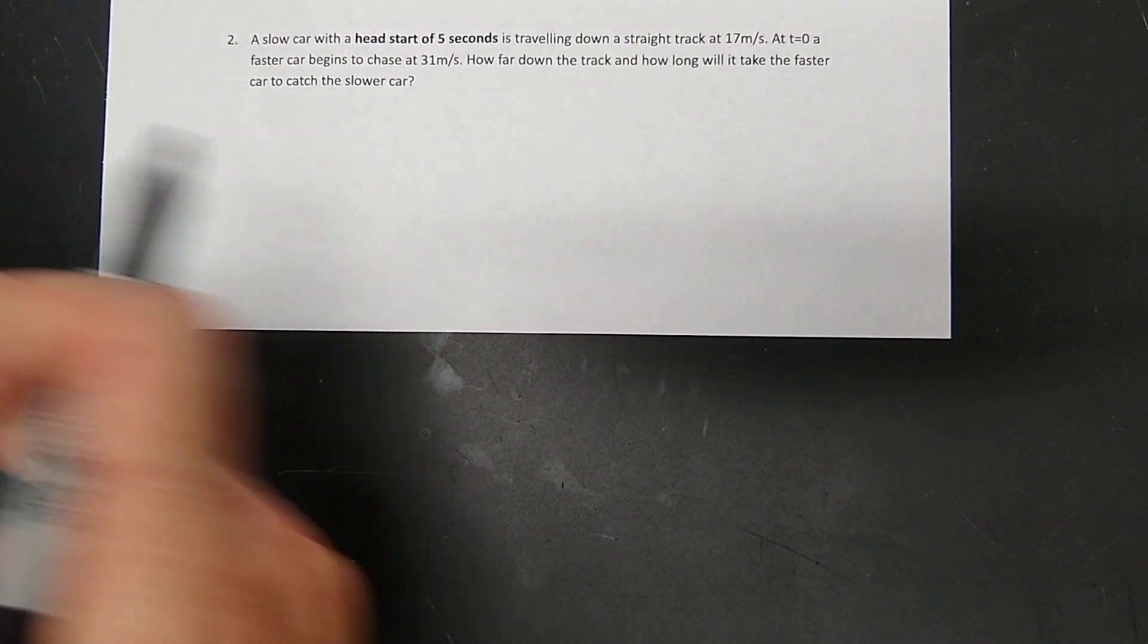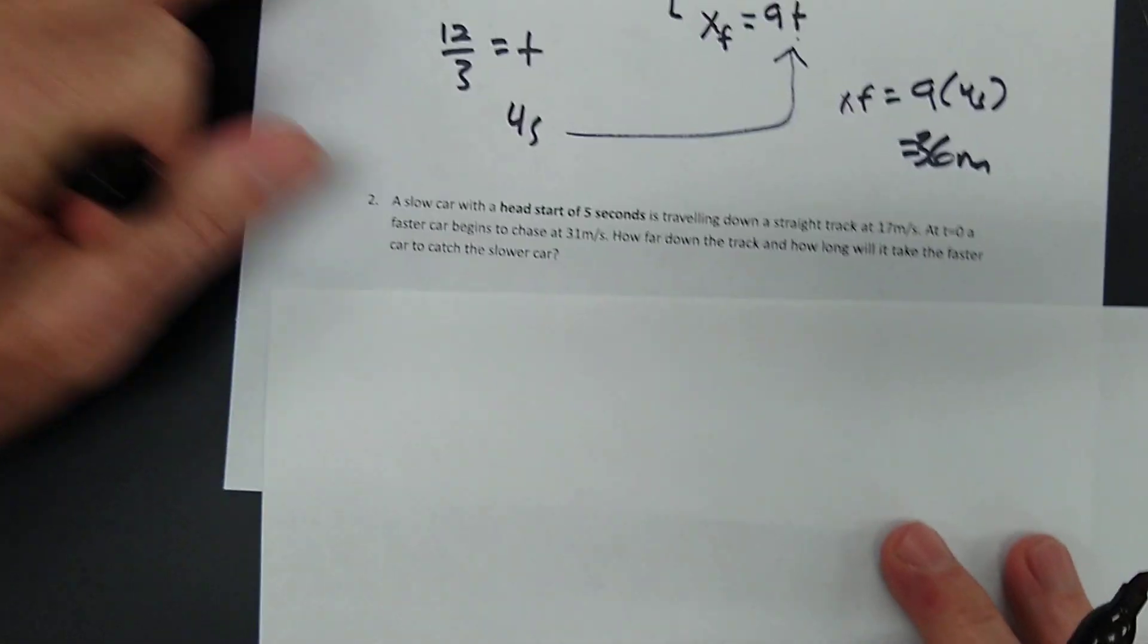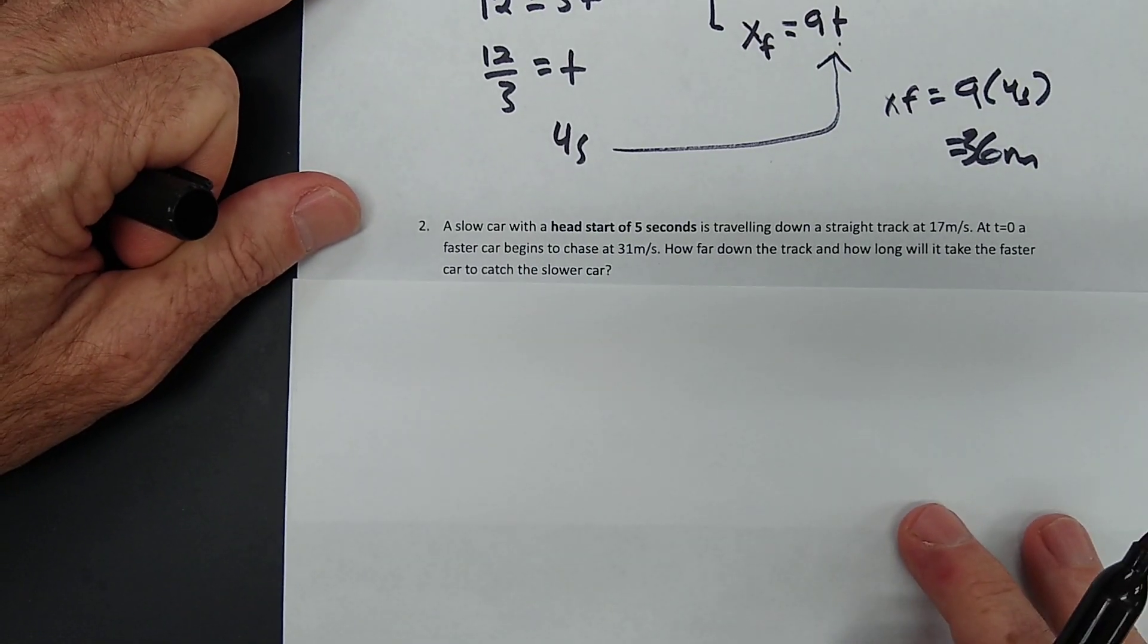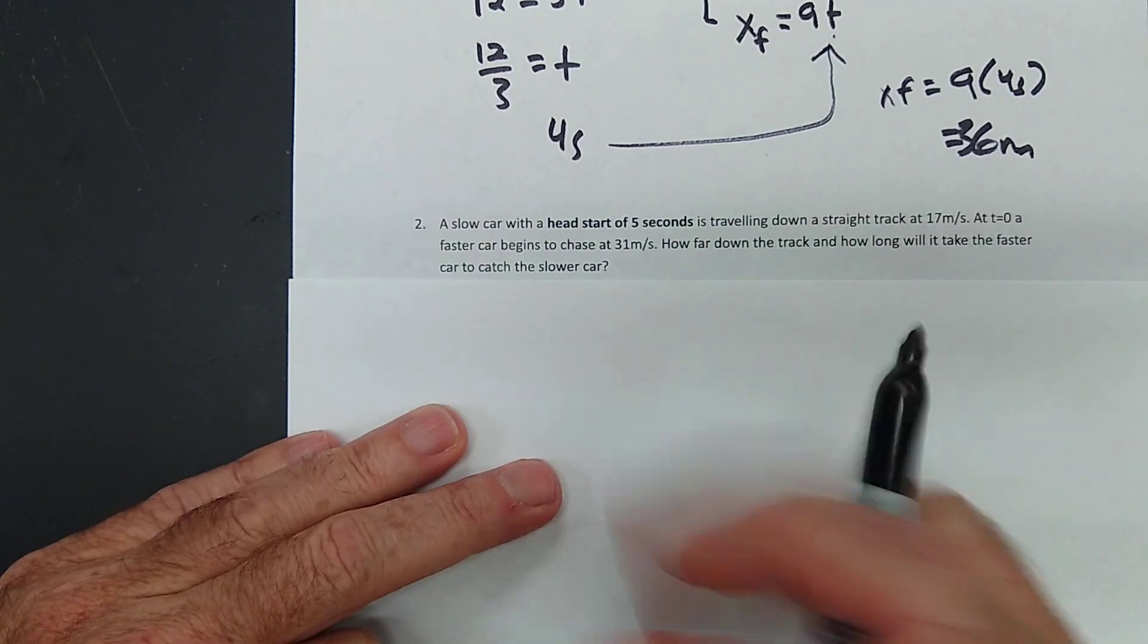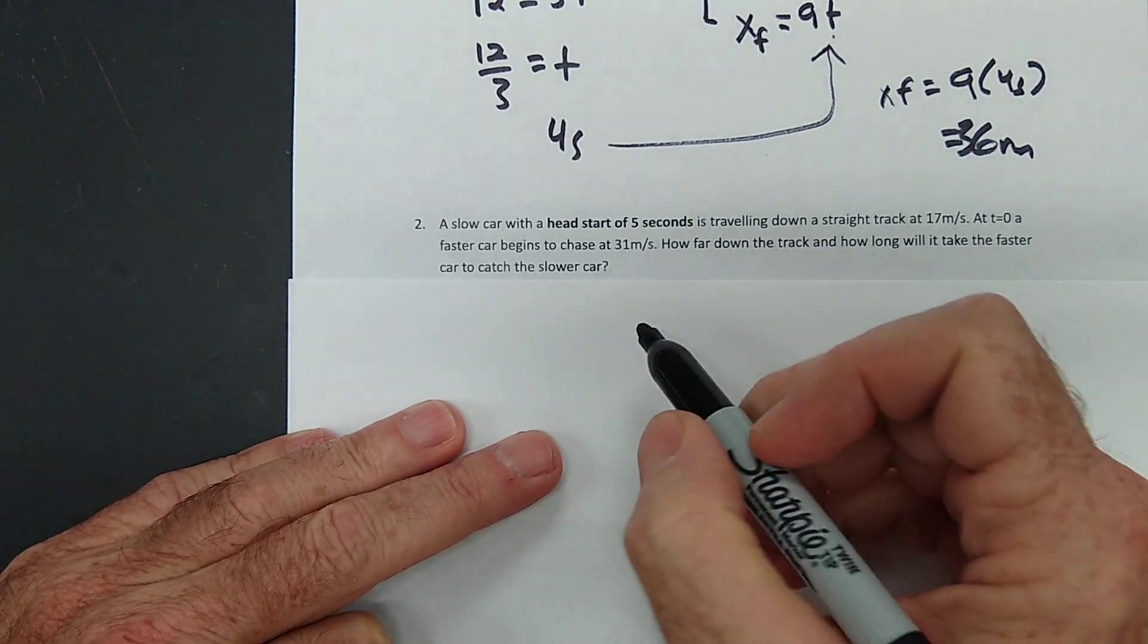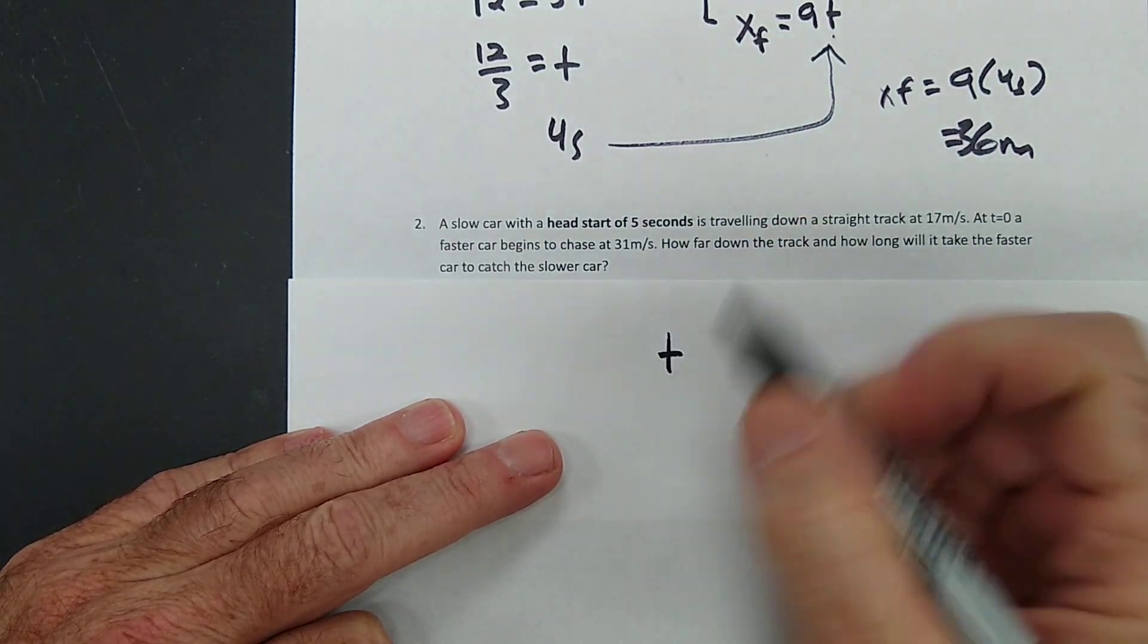Let's try number 2 real quick. Number 2. A slow car with a head start of 5 seconds. It's got a 5 second head start. So for that car, it's time.